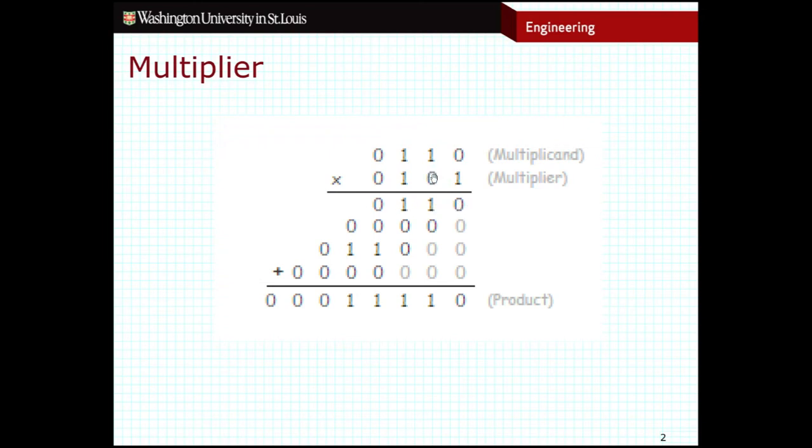Then for the next number here, we're going to repeat that process. But we need to scoot it over one place. So zero times anything is zero. These four zeros are the result of the multiplication, and we have to add an extra zero on the end to move it over to indicate that this is starting from the second position.